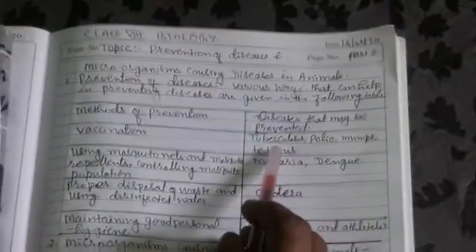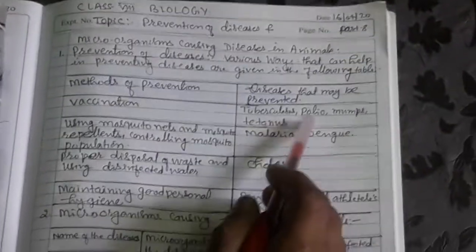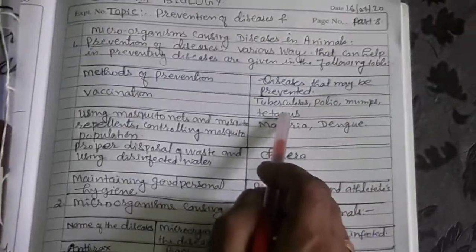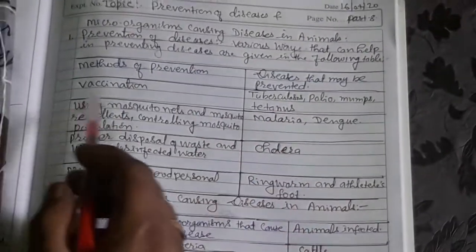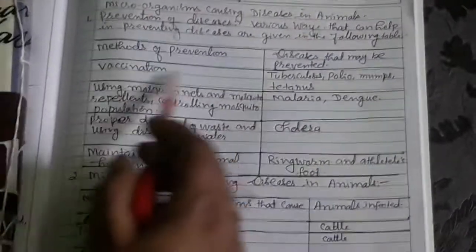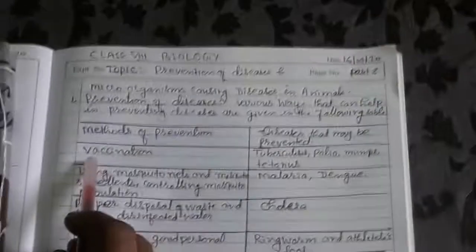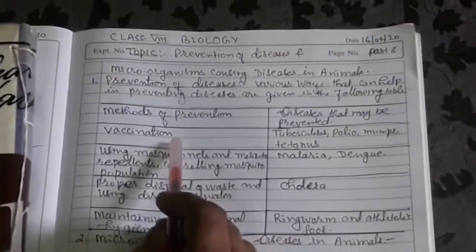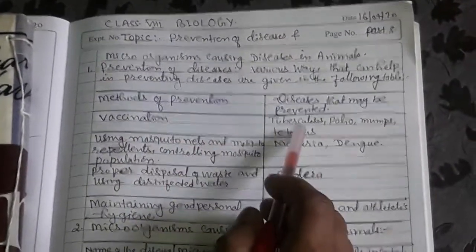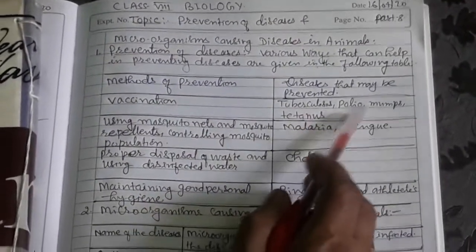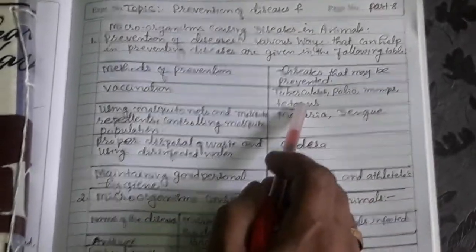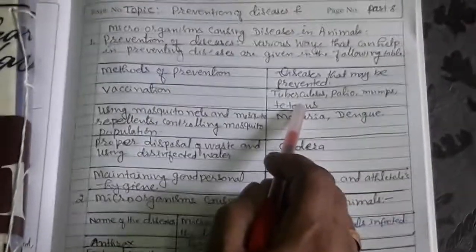Diseases like tuberculosis, polio, mumps, and tetanus are prevented by vaccination. Due to vaccination, TB, polio, mumps, and tetanus can be prevented.